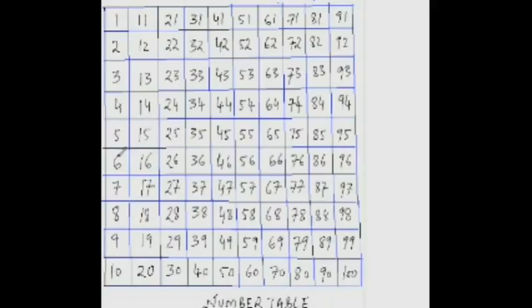So all I have done here is write numbers from 1 to 100 in columns like this. 1, 2, 3, 4, 5, 6, 7, 8, 9, 10, 11, 12, 13, 14, so on and so forth. I just put the numbers in column. Now, let's see how we use this number table to add numbers.